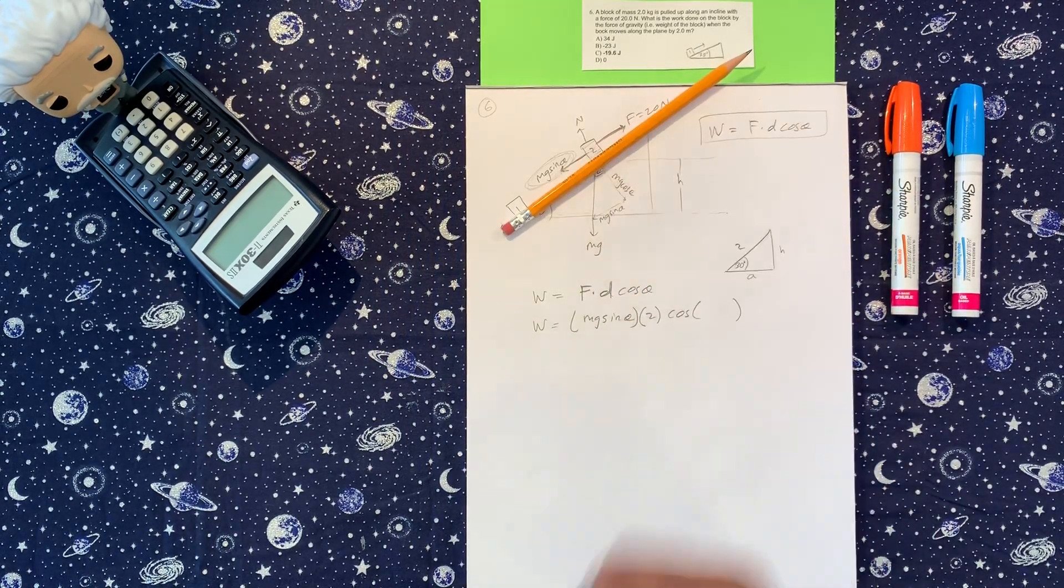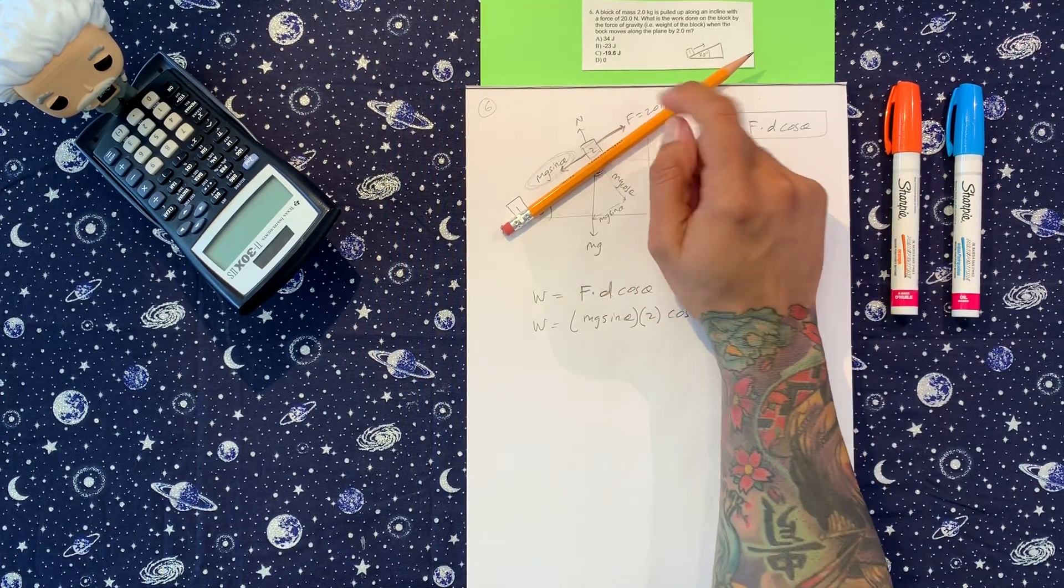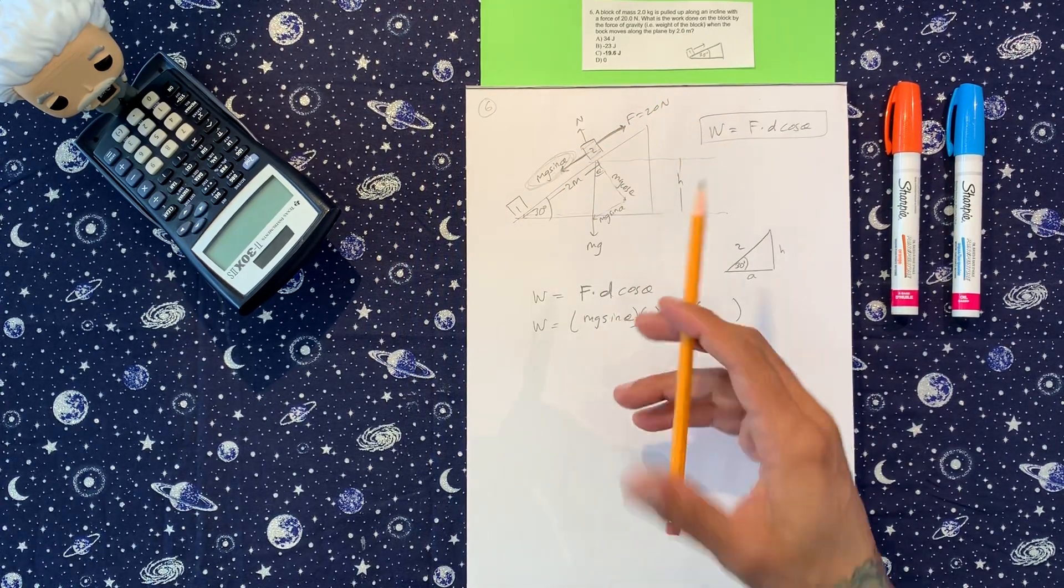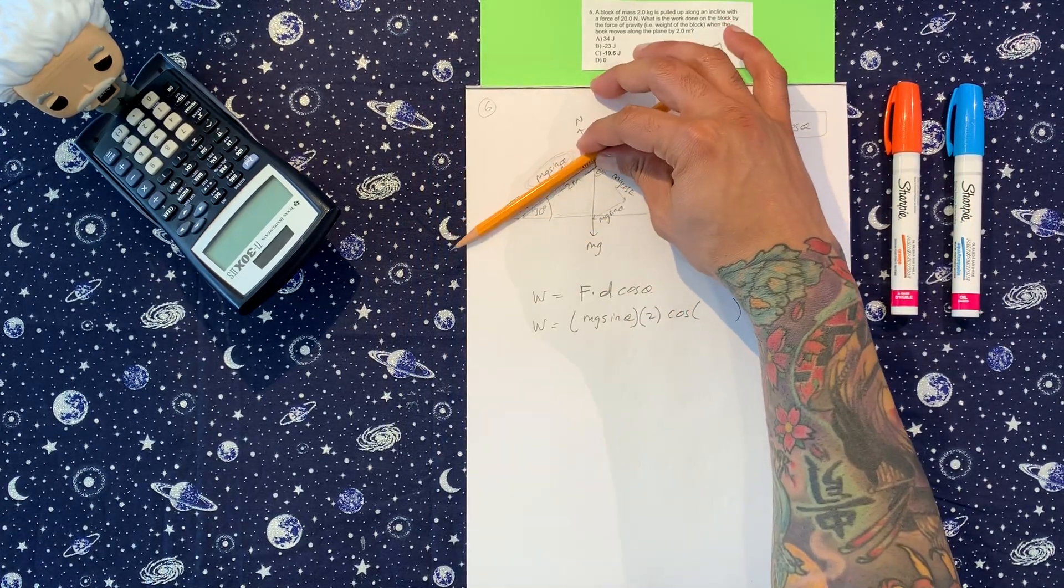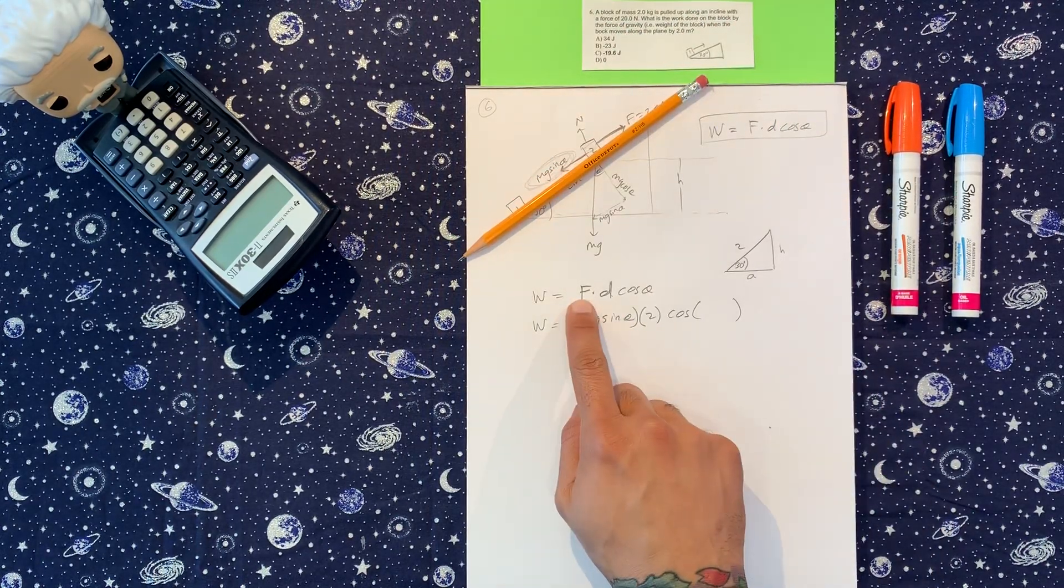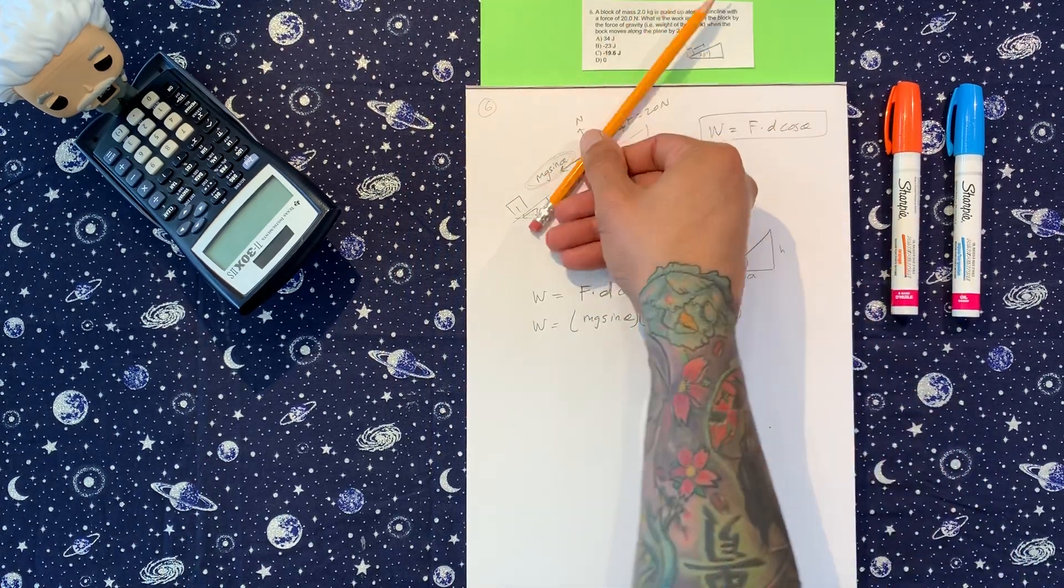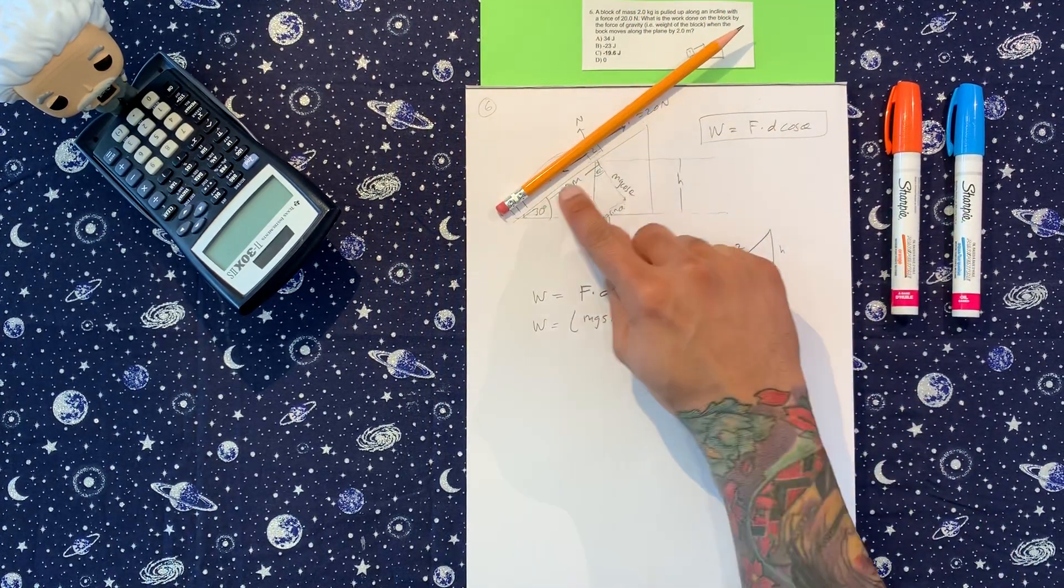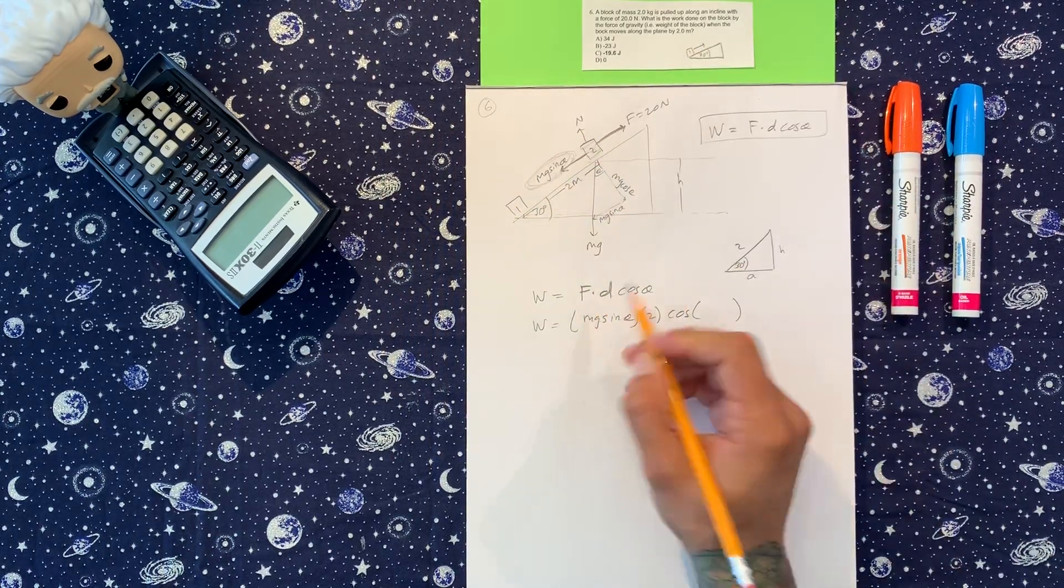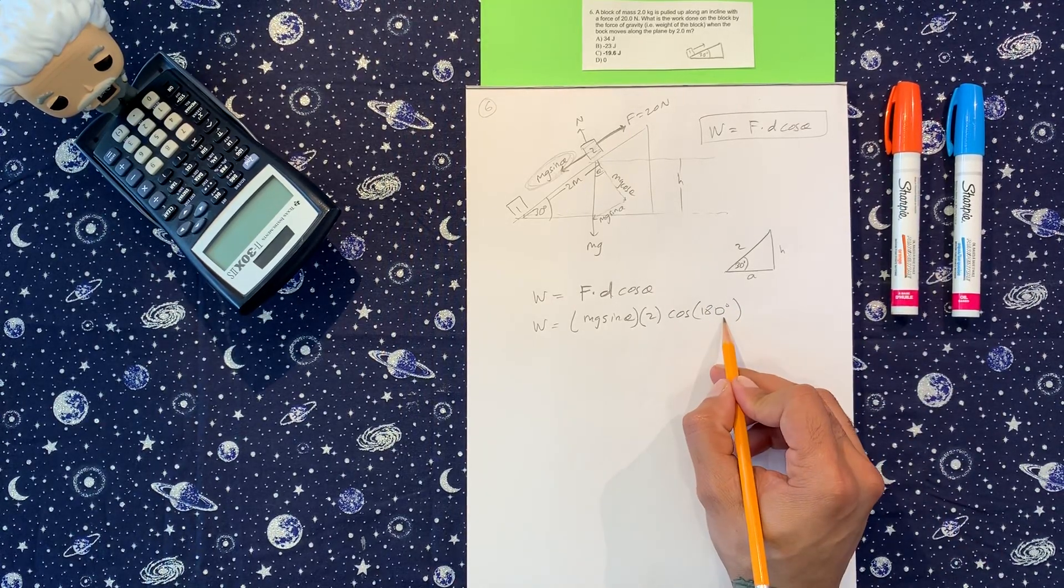And the displacement is also going in that direction. But this is normal force, right? What we're looking at is the gravitational force. So the gravitational force is actually this way, okay? This is the gravitational force going down. That's this one. And the displacement is 180 degrees that way, because it's going from here to here. So there is an angle between these two, and it's 180. All right? This is negative 1.